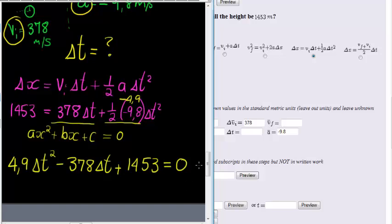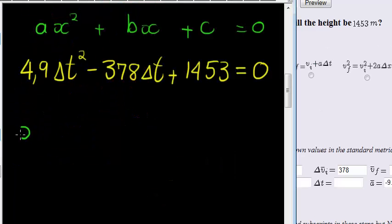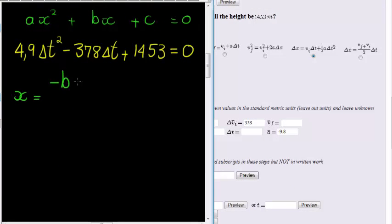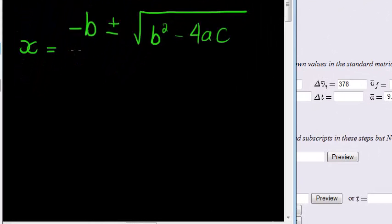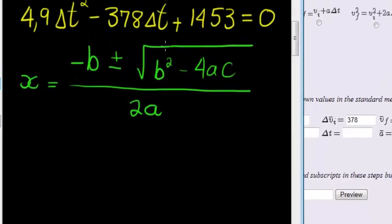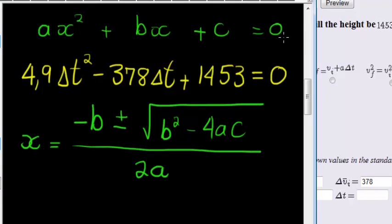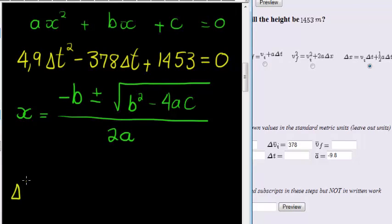And with this in mind, we are going to use the quadratic formula to actually solve this. Do you remember the quadratic formula? Well, the quadratic formula says that x is equal to negative b plus minus the square root of b squared minus 4ac divided by 2a. That is if I have this expression.